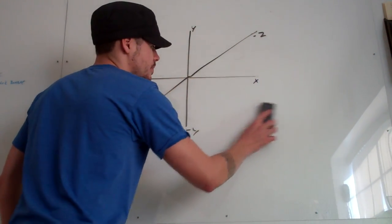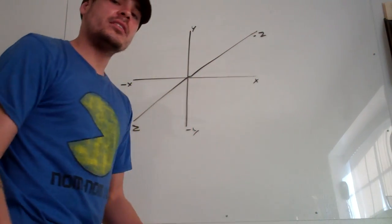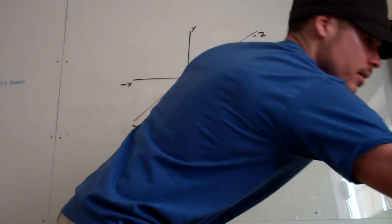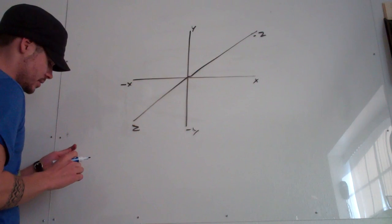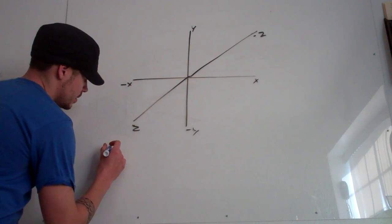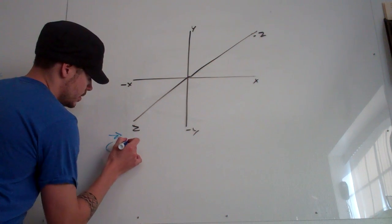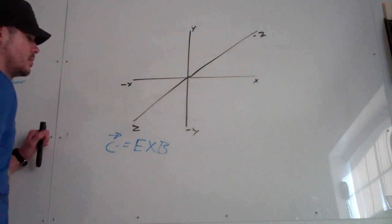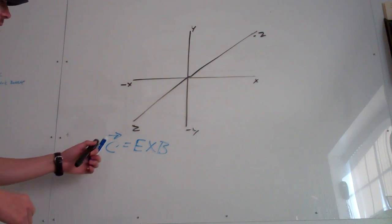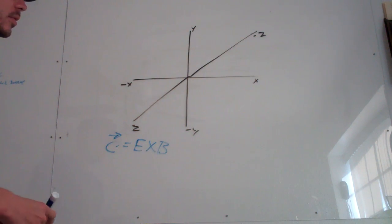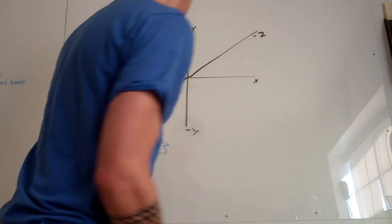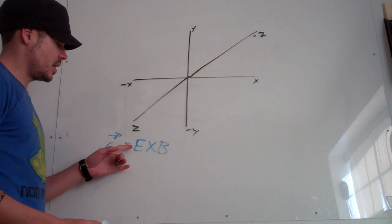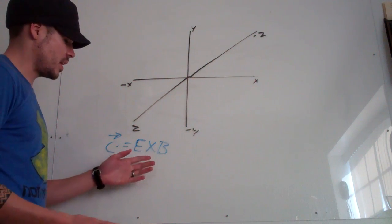Let's try, for example, the propagation of light or electromagnetic waves, which is given by this equation: C is equal to E cross B. That means that the direction an electromagnetic wave is going to go depends on the directions of E cross B.